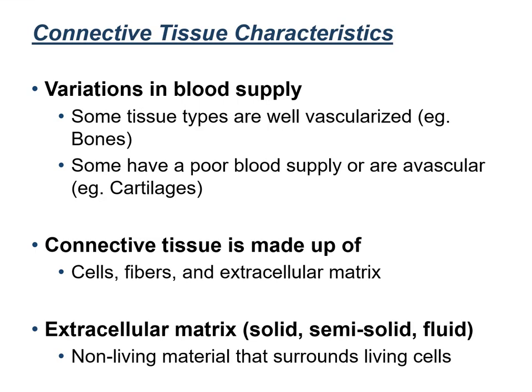An important characteristic of connective tissue is its variability in function, and this is because of the diversity in structure. First, there are variations in blood supply. Some connective tissues are highly vascularized — that means there are blood vessels inside those tissues transporting nutrients or waste products. An example is bones. But some other connective tissues can be poorly vascularized or even avascular; for example, cartilages have very poor blood supply.